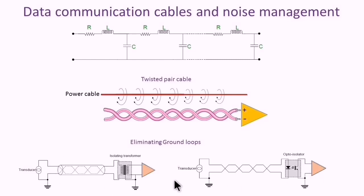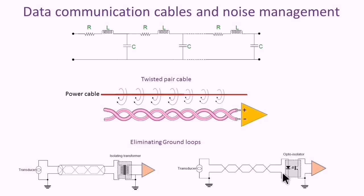This will ensure both grounds are isolated from each other and prevent unwanted ground current from flowing, in order to receive clean signals. This can be achieved using an isolation transformer or opto-isolator, which converts the signal to light and then copies it to the other end.